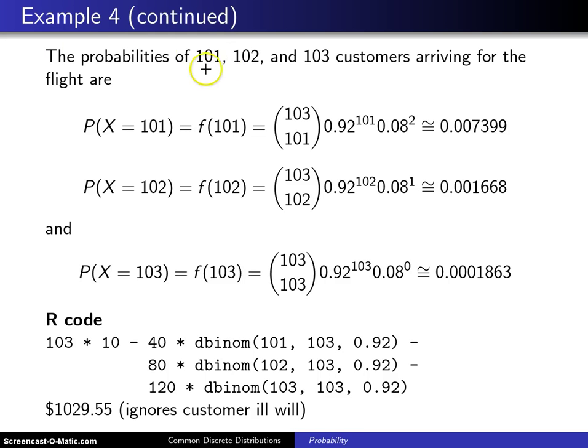The probability that 101 people will show up for the flight is the probability x equals 101. This is calculated by plugging 101 into the probability mass function and that'll be 103 choose 101 times 0.92 to the 101 times 0.08 squared and this works out to 0.007399. Not very likely. This could be calculated in R with the dbinom function using arguments 101, 103, and 0.92.